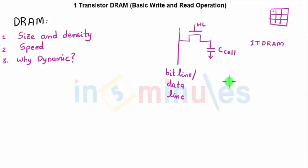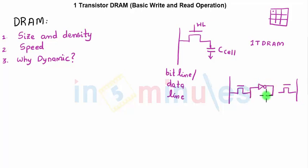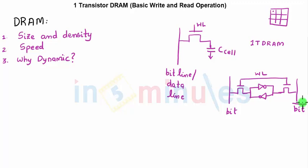It looks quite small compared to what we studied for SRAM, where we had two pass transistors connected to a bit and bit-bar line, which in turn were connected to inverters. At the transistor level, those two were the word lines, this was bit, and this was bit-bar. So compared to a six-transistor SRAM, this one transistor DRAM is quite compact, and hence its size is much smaller. The density — meaning more cells in the same area — is therefore quite high.